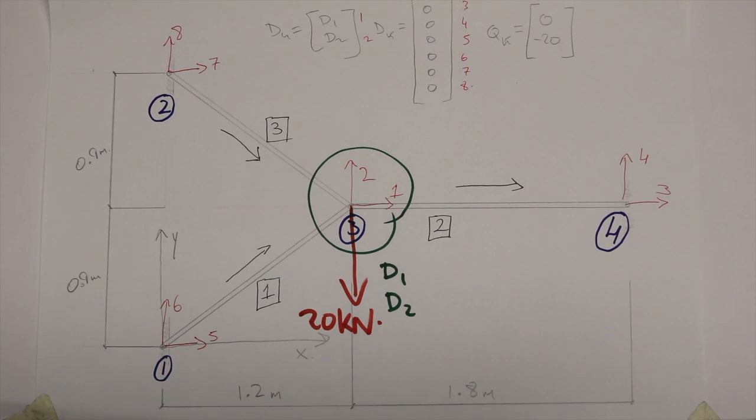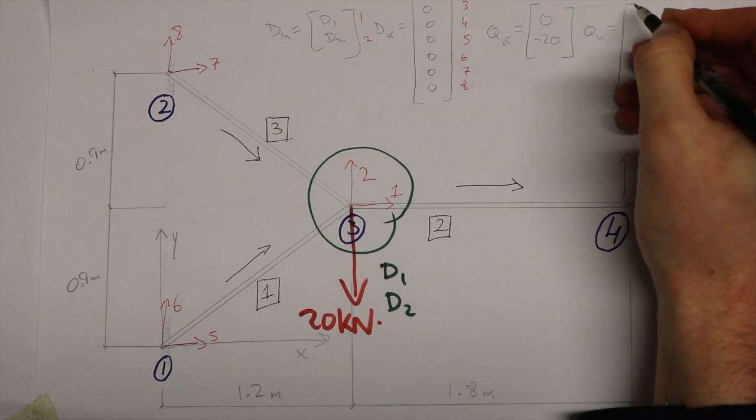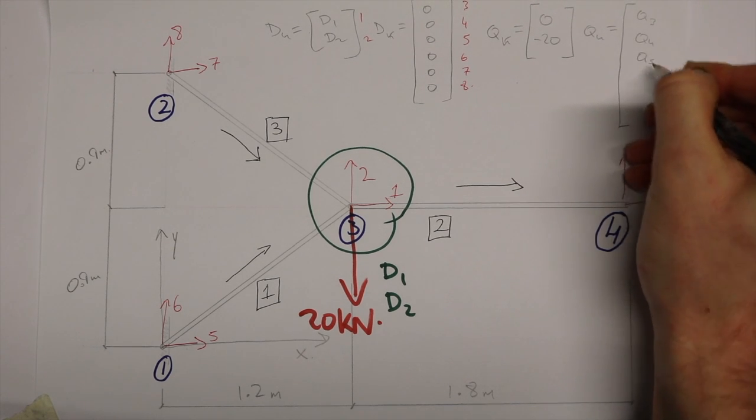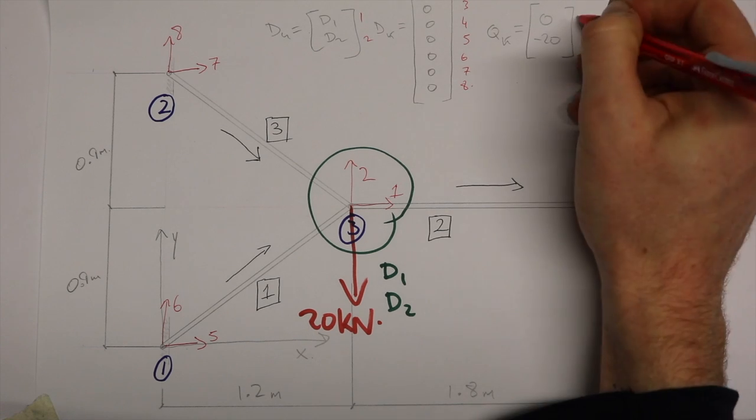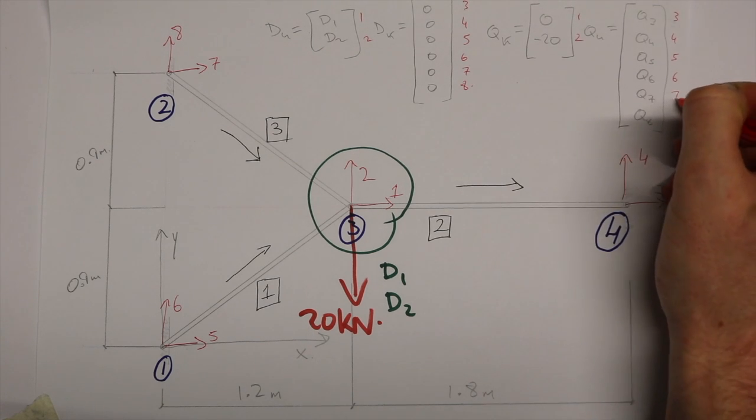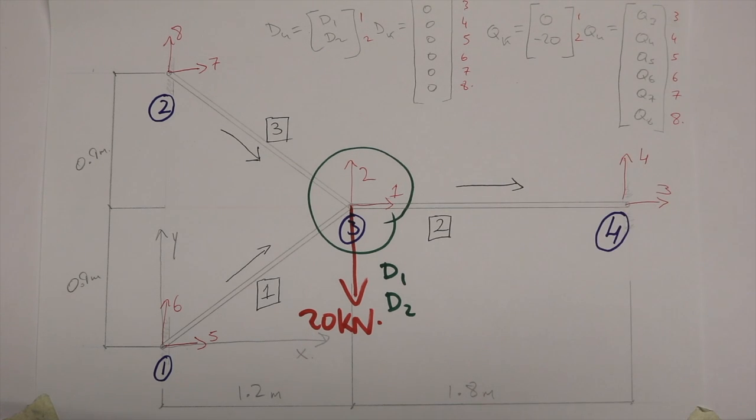This can be assumed as part of our known forces along with a zero kilonewton force for degree of freedom 1. Therefore, there are six other unknown forces at the remaining three nodes.